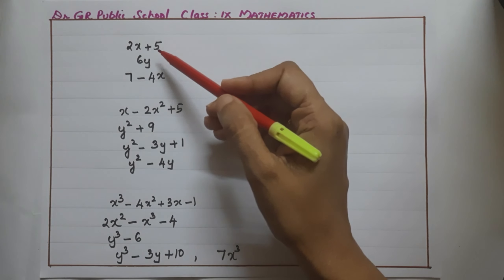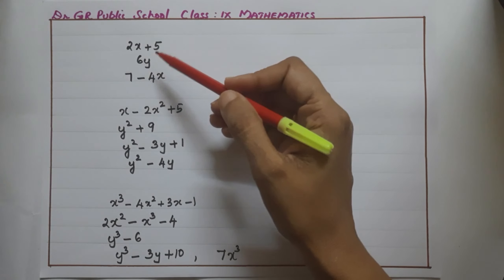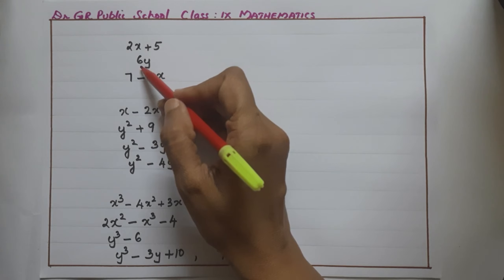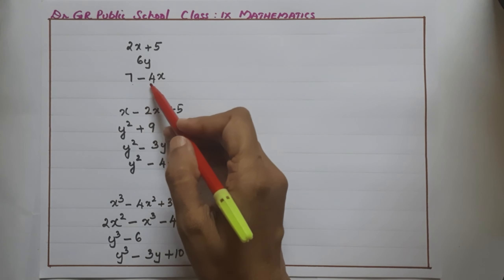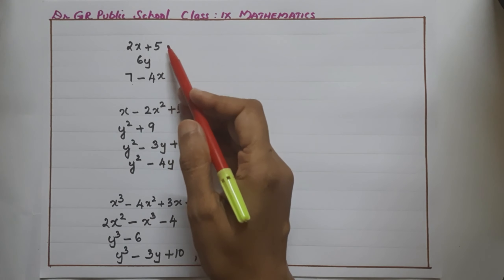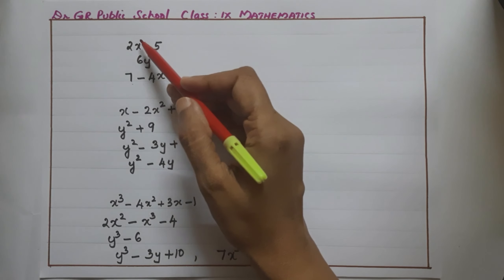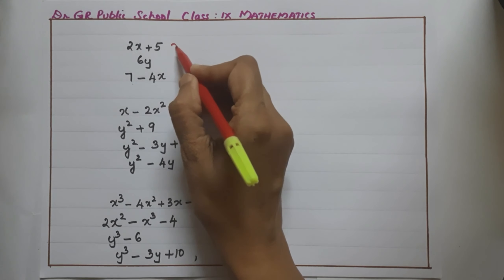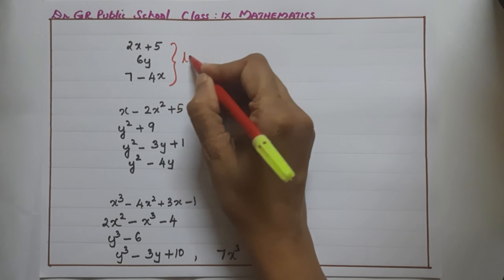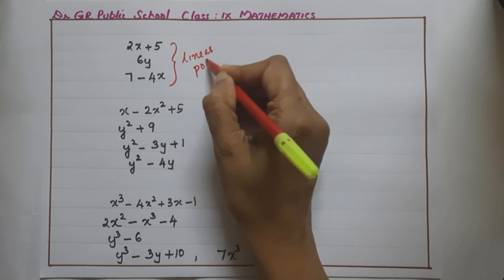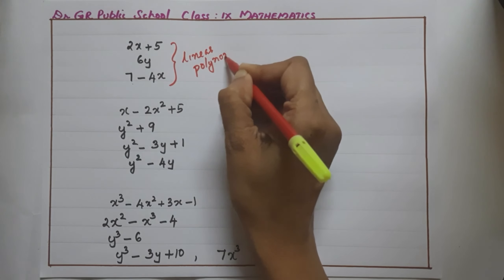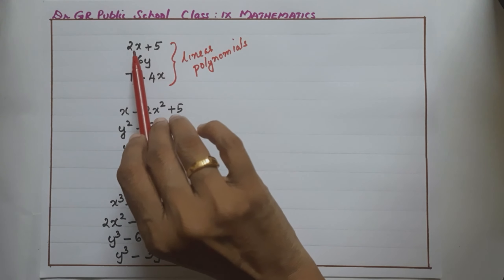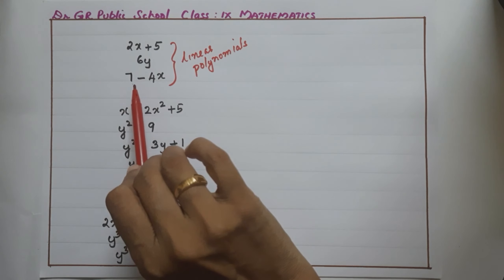Consider these polynomials: 2x + 5, then 6y, then 7 - 4x. What type of polynomials are these? The highest degree is 1 in each case — here 1, here 1, here also 1. So these are linear polynomials in one variable. Now, 2x + 5 has two terms, 6y has one term, and 7 - 4x has two terms.